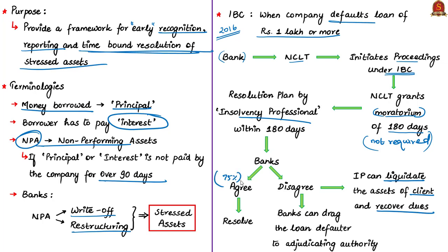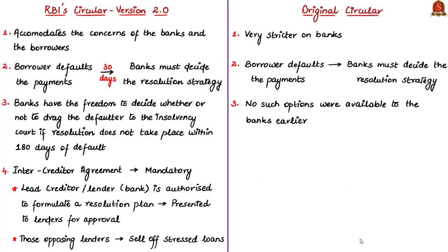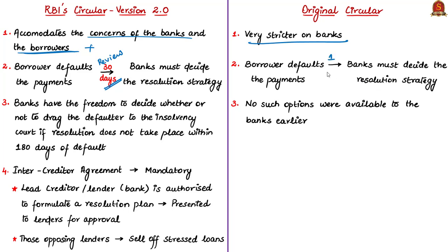The new circular issued by RBI says that banks will have the freedom to decide whether they can take the defaulter to the adjudicating authority or not. The new circular manages to retain the spirit of the original version while accommodating the concerns of banks and borrowers, since the older version was very strict on banks. According to the new circular, if the borrower defaults, banks can review and decide on the resolution strategy within 30 days. In the original circular of February 2018, the review period was just one day — which banks found very difficult and impractical given operational constraints.